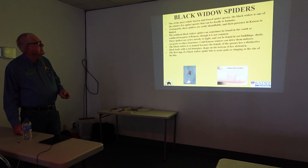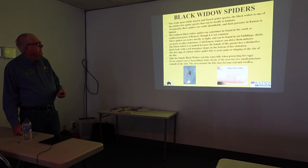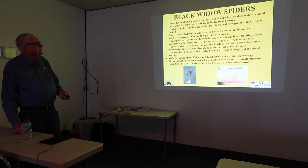The first sign of a Black Widow spider bite is acute pain and stinging at the bite site. Only the female Black Widow can bite, especially when protecting her eggs. If you suspect you've been bitten, look closely to see if you can see two fang mark puncture wounds. The area around the bite may become red and swollen.